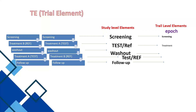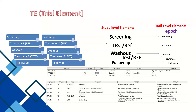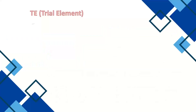Screening, washout, and follow-up also come under the trial-level elements called Epochs, while the study-level elements are called Trial Elements. For a parallel study, there are only three elements: Screening, Treatment, and Follow-up. For a crossover study, you can see: Screening, first drug element, Washout, second drug element, then Follow-up. Based on the study design and protocol, you figure out the study elements and include them in the Trial ELEMENT dataset.